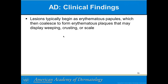Clinical findings: lesions begin as erythematous papules that coalesce to form erythematous plaques, and may display weeping, crusting, or scale. Weeping is due to spongiosis — the separation by fluid of keratinocytes in the epidermis. If those little fluid pockets join up they'll weep on the surface. On the hands, where the stratum corneum is very thick, the little fluid vesicles can't break out onto the surface, so you see them as little clear vesicles under the skin, like tapioca pudding — very itchy.